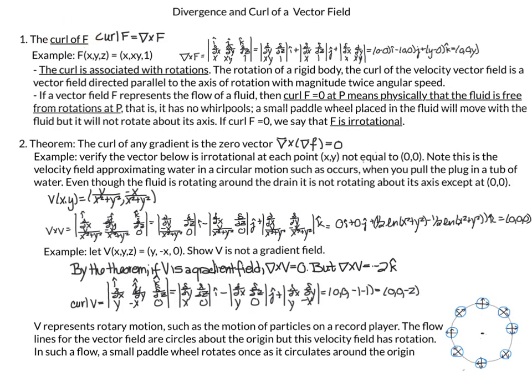We will start with the definition of curl. Sometimes it's noted curl of f, and f is a vector field. The definition is that it is del cross f. So for example if f of x, y, z is equal to (x, xy, 1), del — if you recall — is d/dx, d/dy, and d/dz, the partial derivatives with respect to the first, second, and third variable.